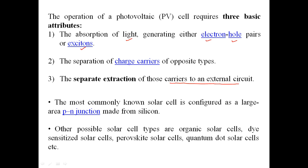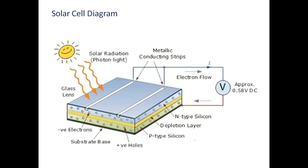The most commonly known solar cell is configured as a large-area p-n junction made from silicon. Other commercially available solar cells are usually of organic material or dye-based, called dye-sensitized solar cells. Nowadays we have specialized solar cells made of perovskite, which have become very popular. Very recently there are quantum dot solar cells — not commercially available yet but achieving higher efficiency in research labs.